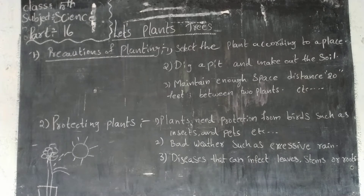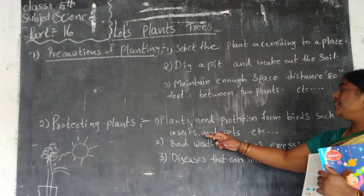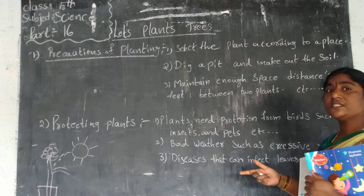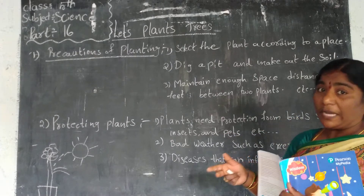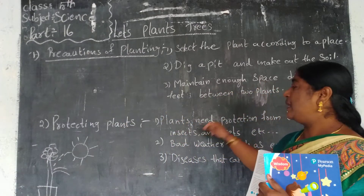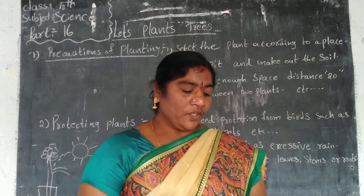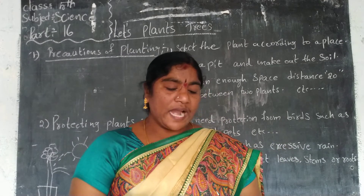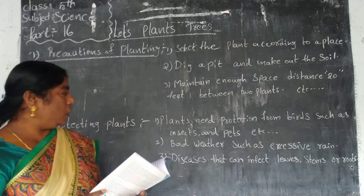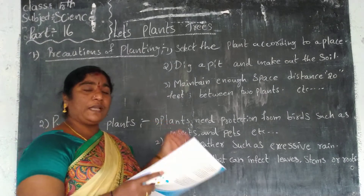Plants need protection from birds, insects, and pests like squirrels and monkeys. They also need protection from bad weather such as excessive rains, which are harmful to the plants.